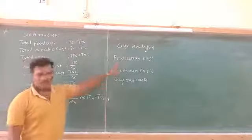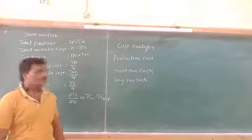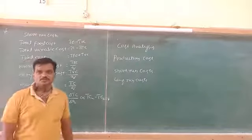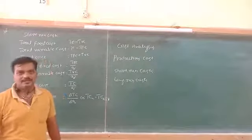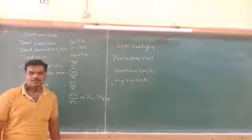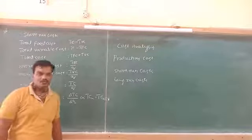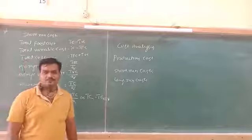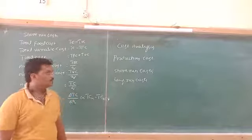So what do we mean by production costs? Production costs means the expenses incurred by the producer to produce a commodity. That means it includes implicit and explicit expenses. That is called production costs.